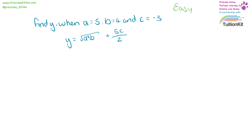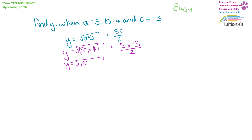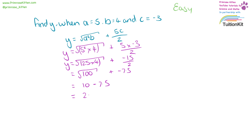Find y when a equals 5, b equals 4, and c equals minus 3. So y equals the square root of a squared, so that's 5 squared, times b, which is 4, plus 5 times c, so that's 5 times minus 3, divided by 2. The square root of 5 squared — 25 times 4, plus 5 times minus 3, which is minus 15, divided by 2. 25 times 4 is 100, so we need the square root of 100, plus 15 divided by 2, that is minus 7.5. The square root of 100 is 10, minus 7.5, gives us an answer of 2.5.